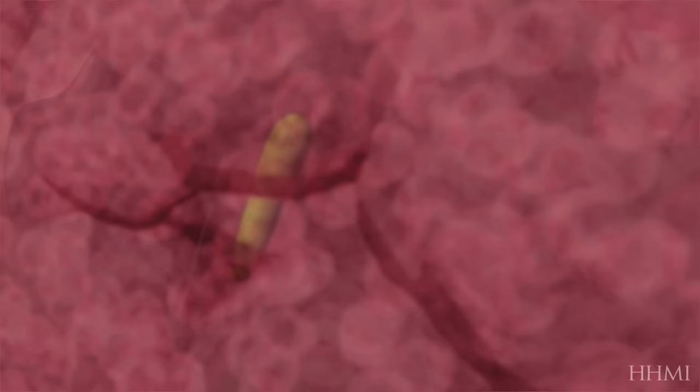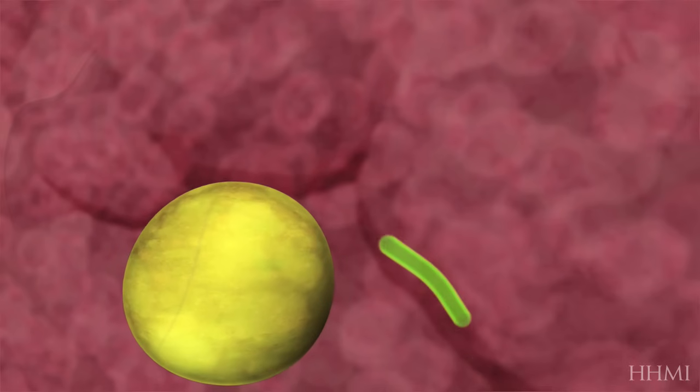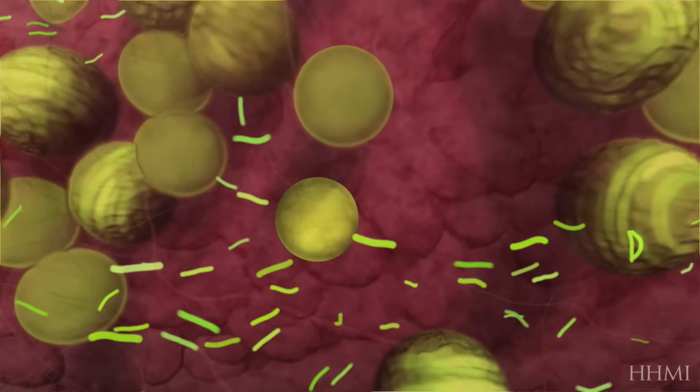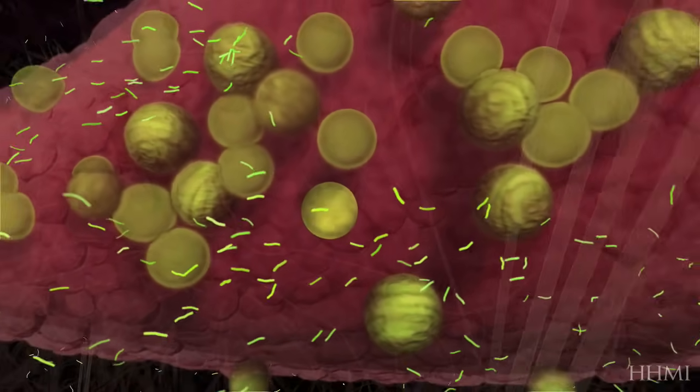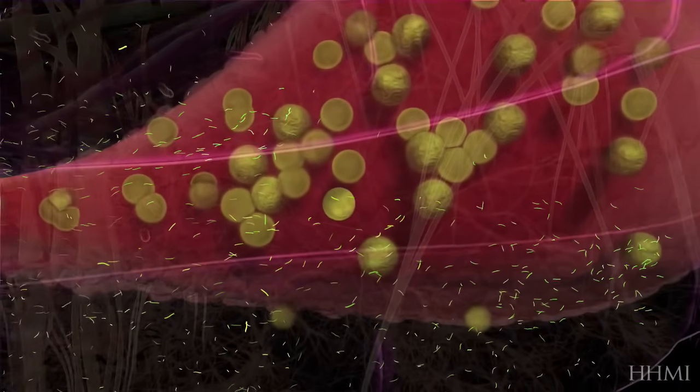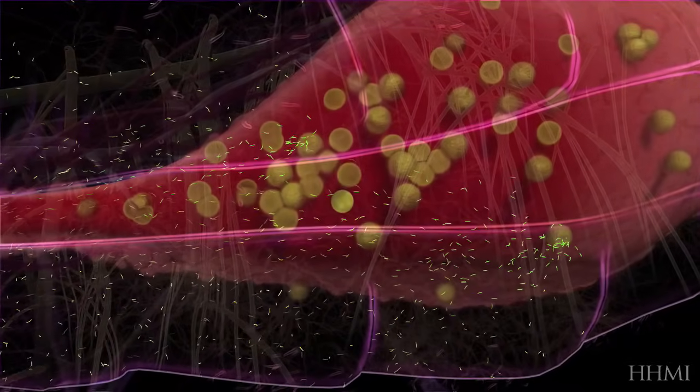It migrates to the outer lining of the mosquito's stomach, before transforming into a cyst. Each cyst produces thousands of thin, tiny parasites, which seek out and infest the mosquito's salivary glands.